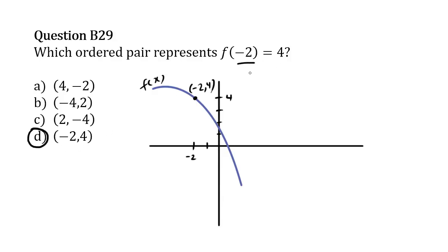This here is the x value, and this here is the y value. So in terms of our point, we have our x's and our y's. Choice D is the correct answer. If we have some function f of x, we have the point negative 2 in terms of left and right, and then we have the y value, positive 4. So this would make sense.